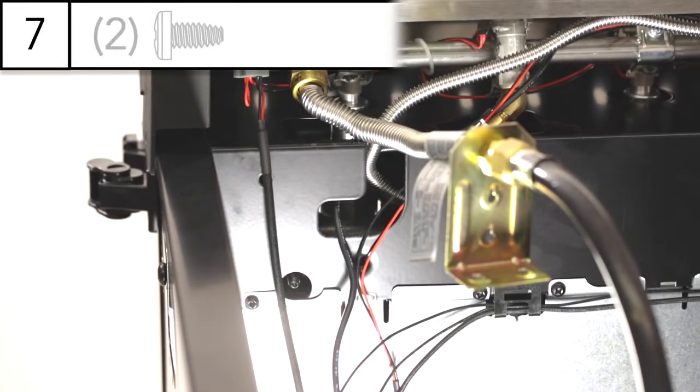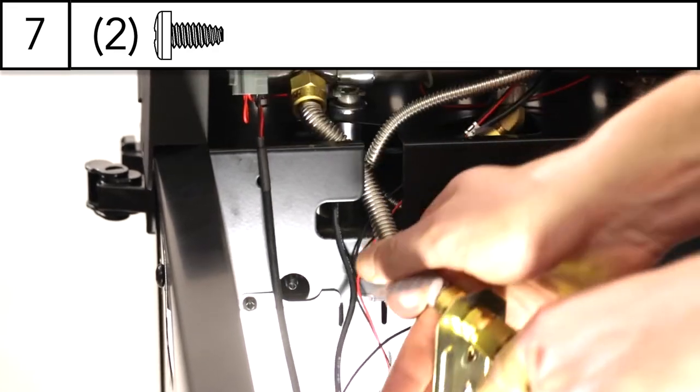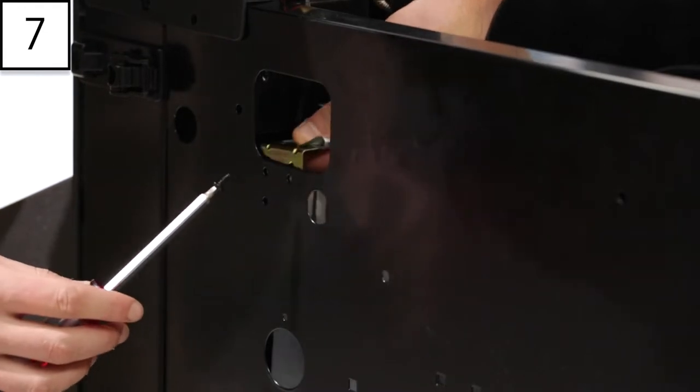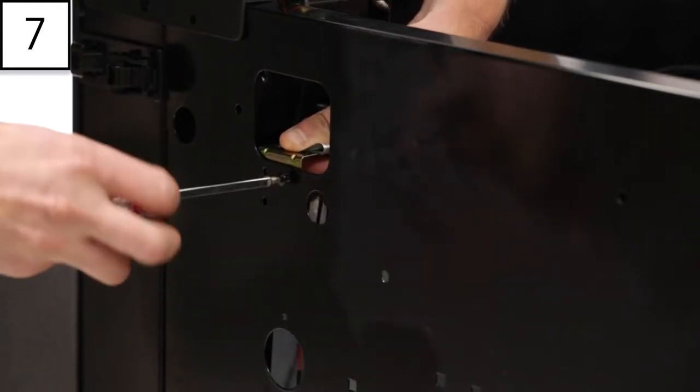Step 7. Route the gas hose through the L-shaped notch on the bottom of the cook box assembly. Then bend it into place. Fasten the bracket to the side panel using the two screws provided.